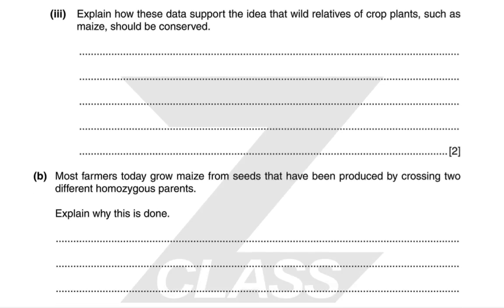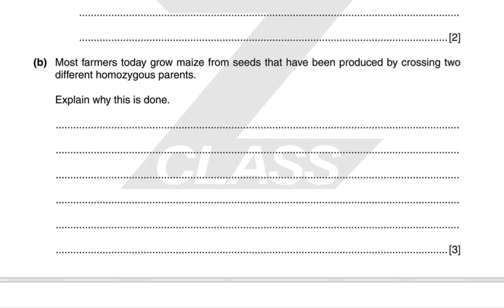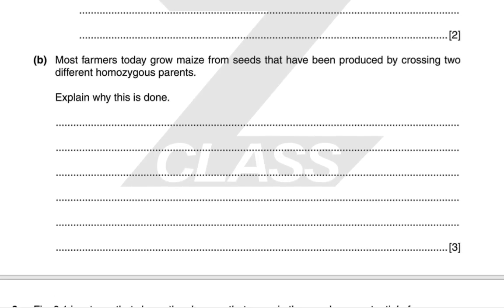Most farmers today grow maize from seeds produced by crossing two different homozygous parents. This is done because of hybrid vigour — hybrids normally have a much higher yield than homozygous parents, help avoid the expression of harmful recessive alleles, and help prevent inbreeding depression, which is a real problem in some monocultures.